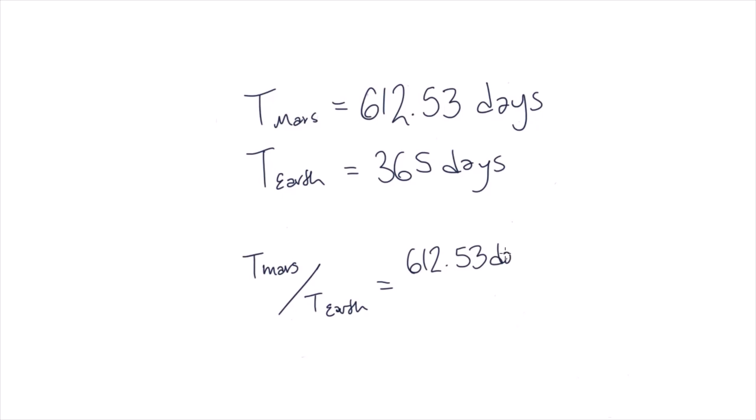We have the period of Mars equal to 612.53 days. We know that the period of Earth is equal to 365 days, so how does the period of Mars compare to that of Earth? If we divide the period of Mars by the period of Earth, we come out with a final answer of 1.68. Therefore, Mars takes 1.68 times longer than Earth to orbit the Sun.